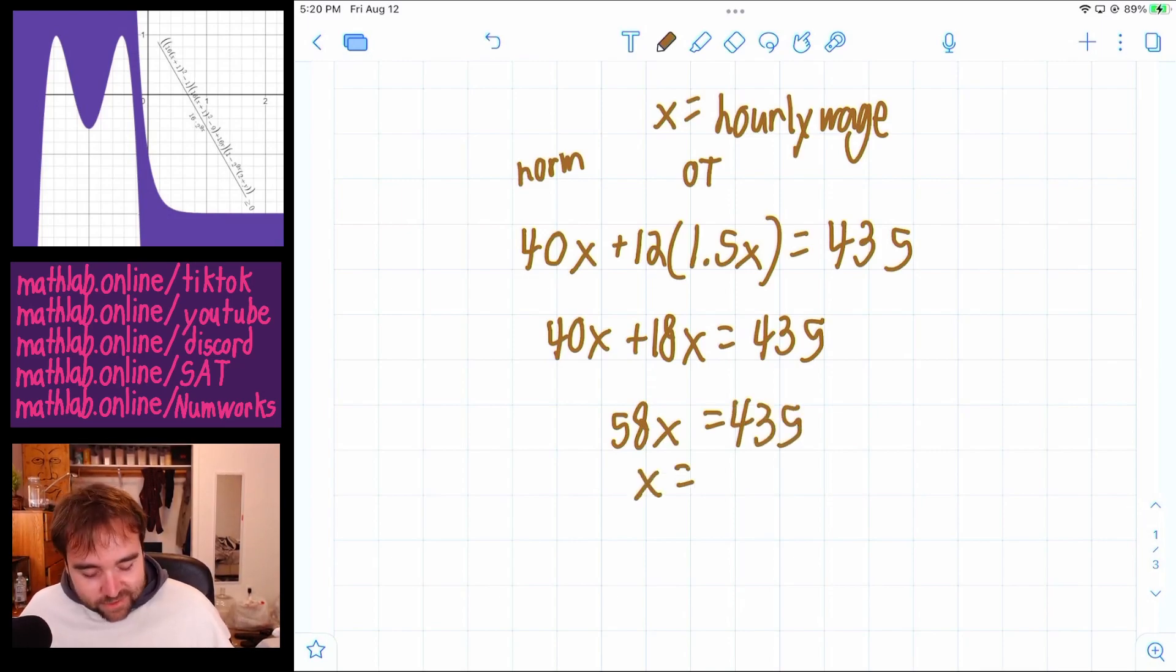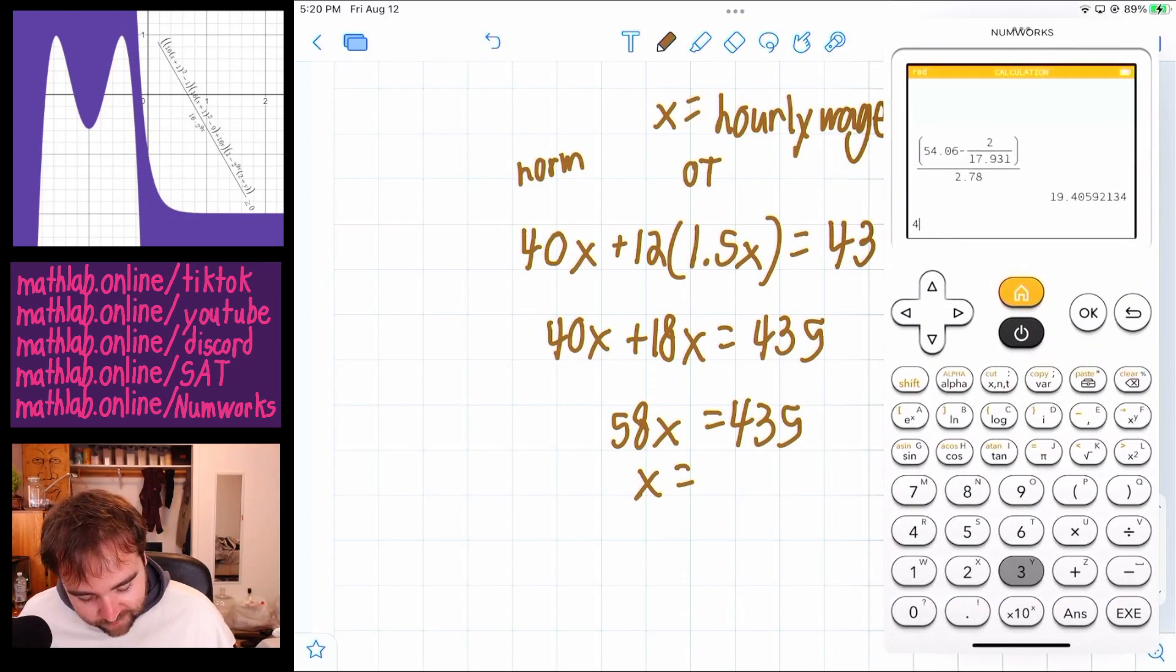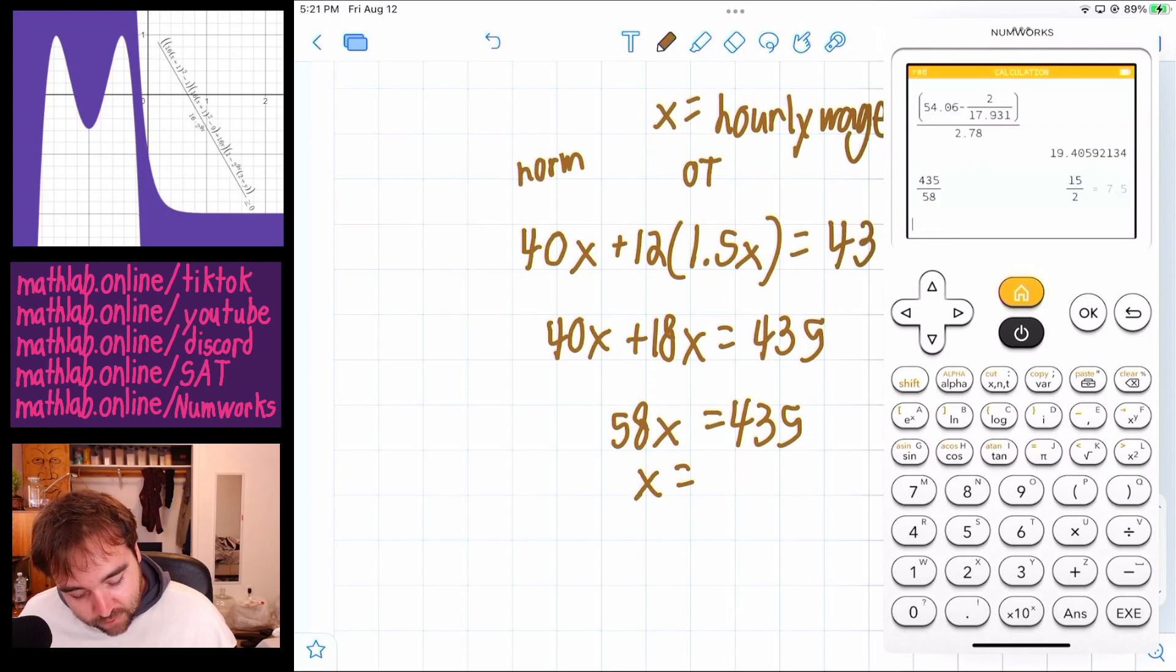And this is definitely a calculator problem. So we're going to swipe in the calculator and go 435 divided by 58 for an hourly wage of $7.50 an hour.